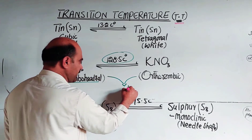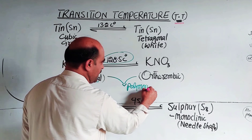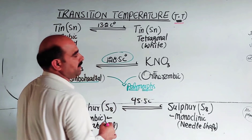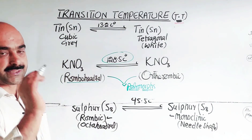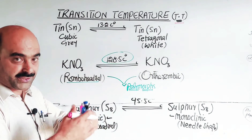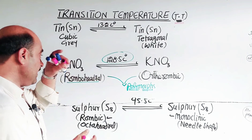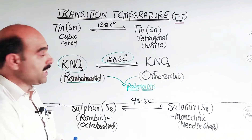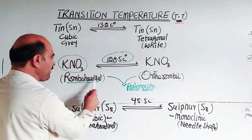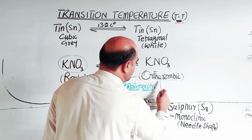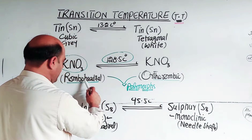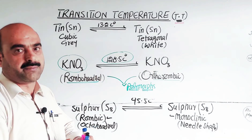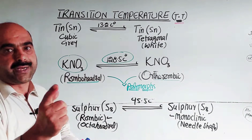The existence of multiple crystalline forms is called polymorphism — poly means many, morph means structure. Polymorphism is a property of crystalline solids, where a compound can exist in more than one crystalline form. This is a property of crystalline solids.